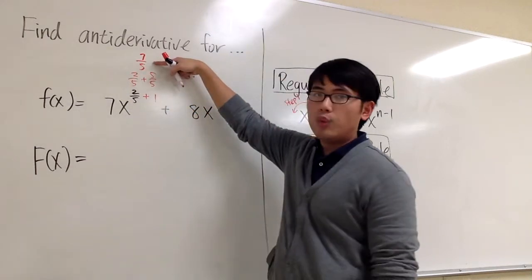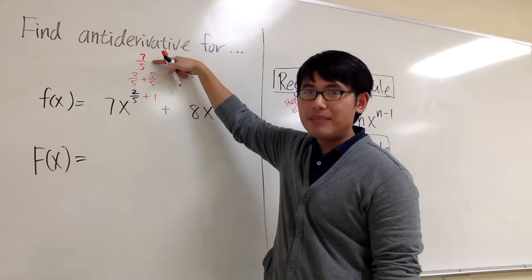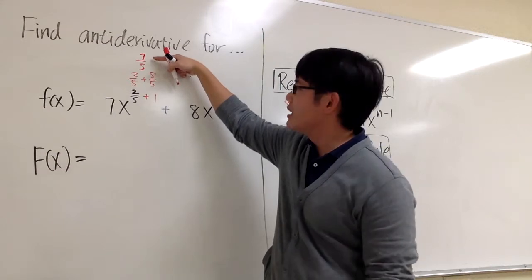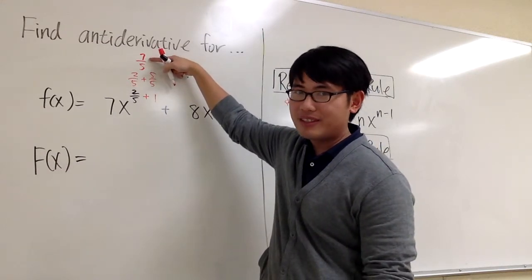And that right here will be the new exponent. And we have to divide it by the new exponent. Because this is a fraction, dividing by a fraction means what?